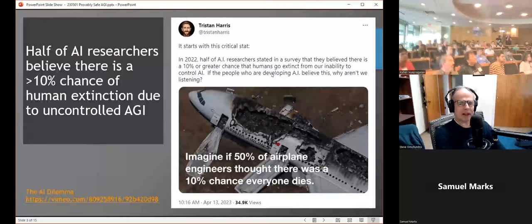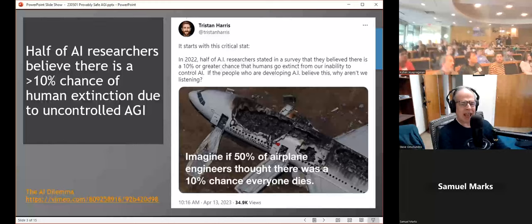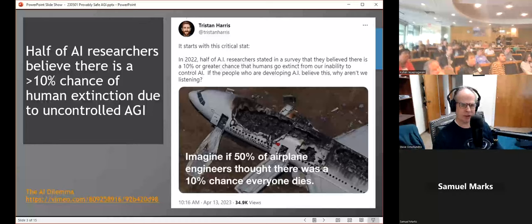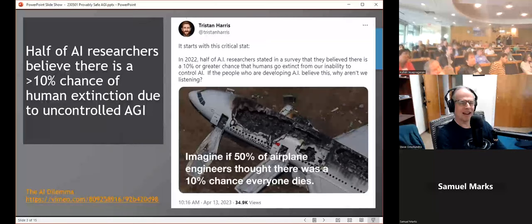Many people are worried about the consequences. There's a nice documentary called The AI Dilemma that references a survey which says that half of AI researchers now believe there's a greater than 10% chance of human extinction due to uncontrolled AGI. So the fire is lit under us and we really need to find good solutions to this.